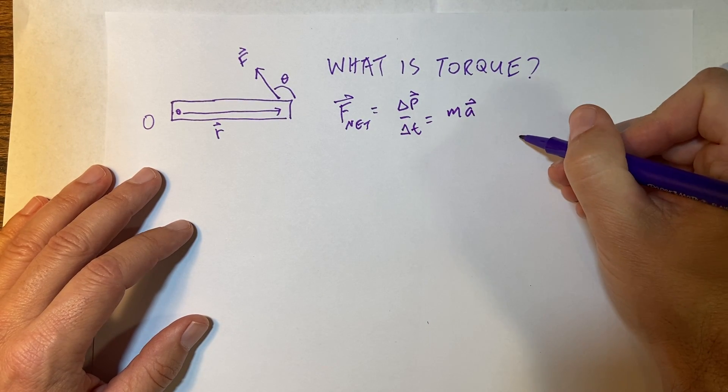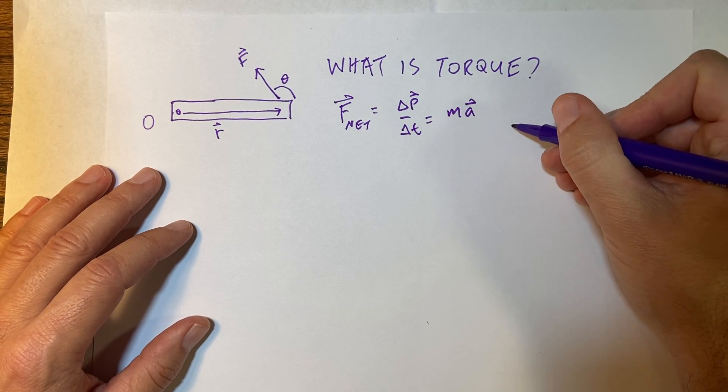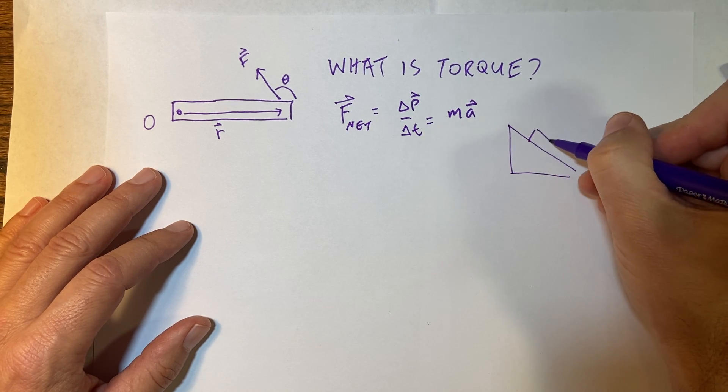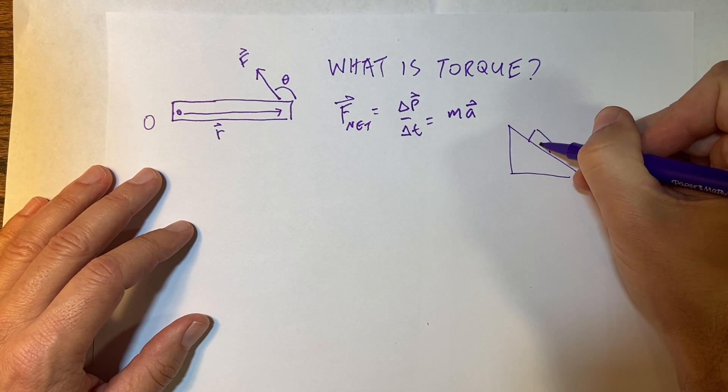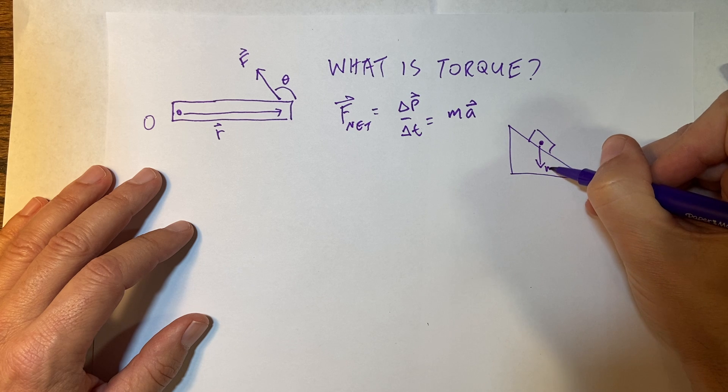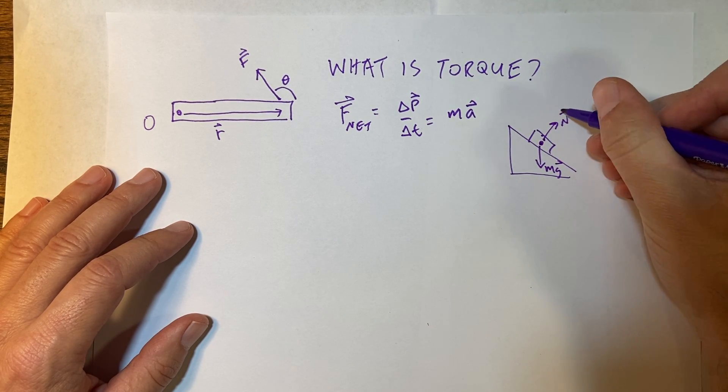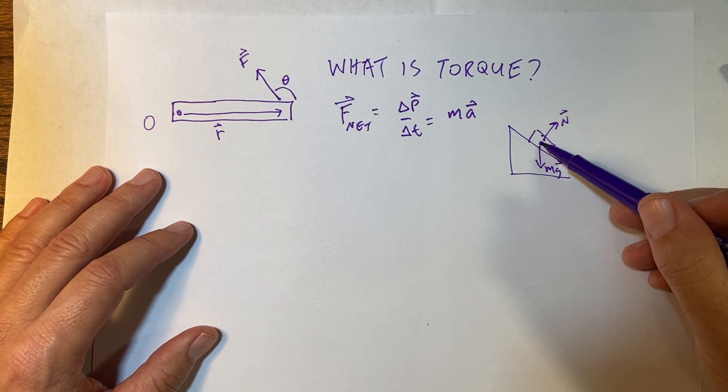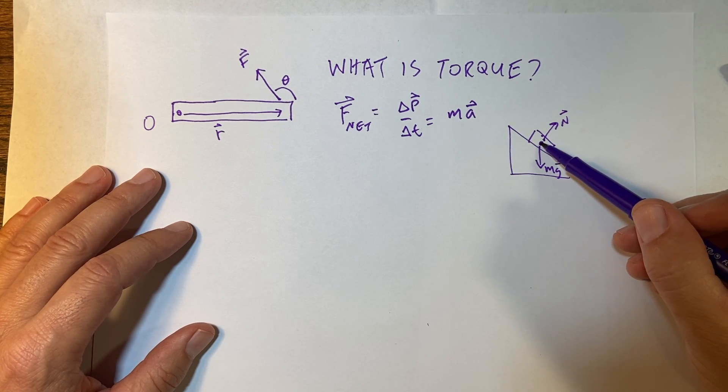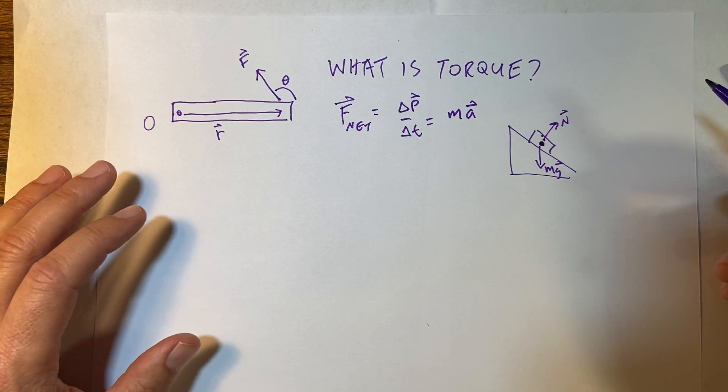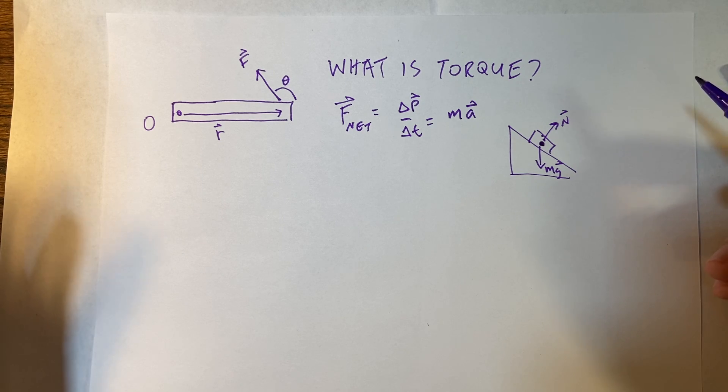And if I did that for, let's say, a box on an incline like this, then I would draw the forces like this: mg, let's just say no friction, n. Now, the thing is that I drew those forces all acting at a point in the center of the object. And that's not really the way things work.